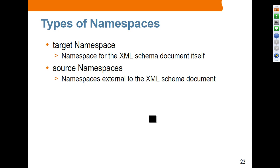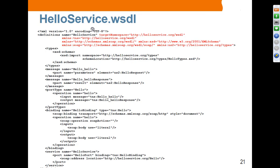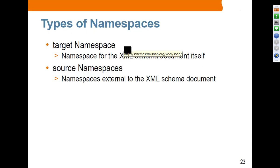There is a concept of target namespace and source namespaces. The target namespace is the namespace for the XML schema document itself. Source namespaces are namespaces external to the XML schema document — these are the typical namespaces we have seen so far. When we see these namespaces, these are all source namespaces, meaning they define the namespaces that you are going to use elements from.